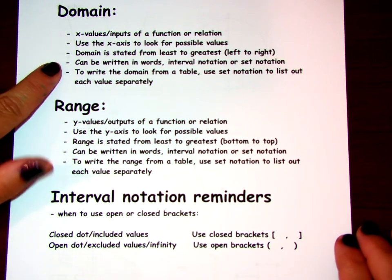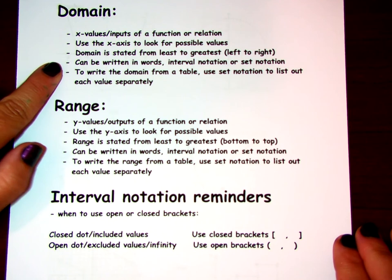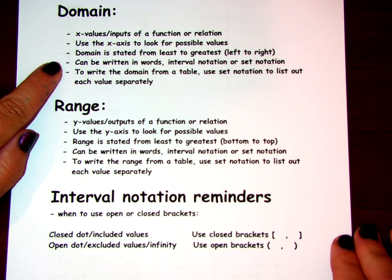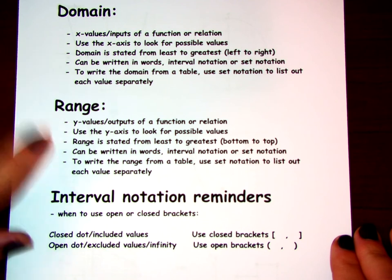To find the domain of a function, we're going to be looking at the x-axis to find all possible x values or inputs that work for a function or a relation. It's going to be stated in least to greatest form. There are a couple ways we can write the domain, which we'll talk about in this review.